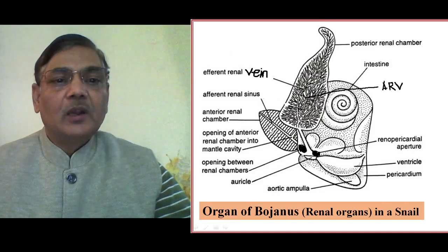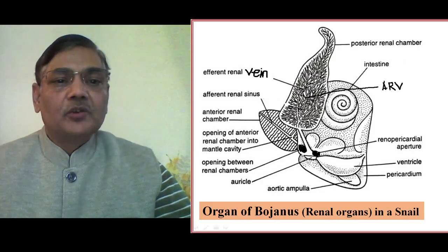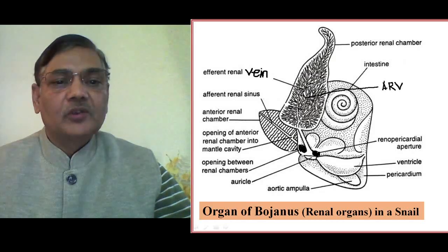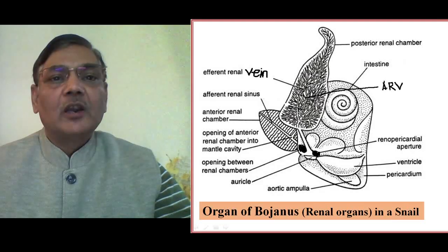As an example, I have taken the case of Pila globosa, which is one of the commonly occurring representatives of Mollusca in India. The structure on the lower side is the anterior chamber of the kidney, and the upper, larger structure is the posterior renal chamber.